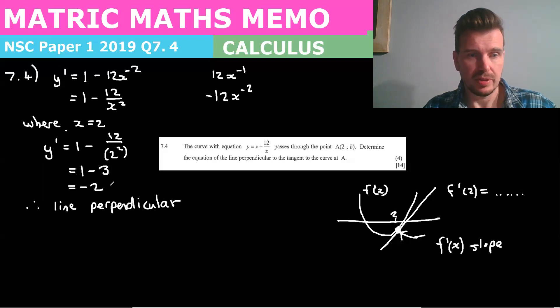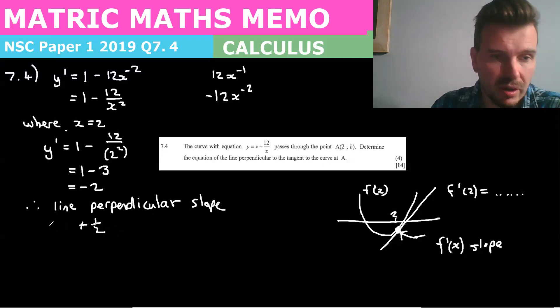So -2 is the same as saying -2/1. So the perpendicular line to that slope would be positive 1/2. So we know that m is equal to 1/2.